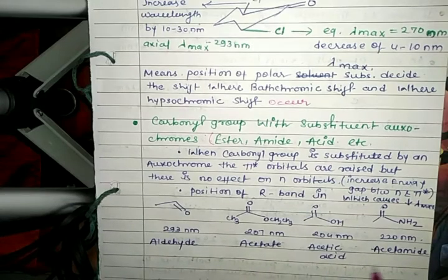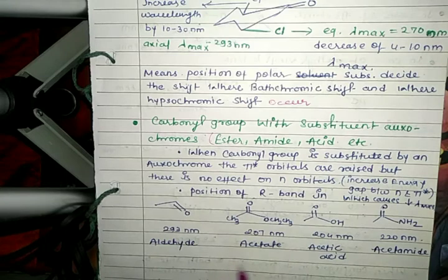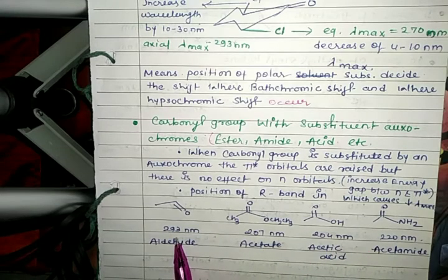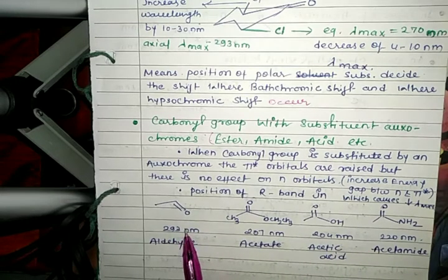The position of the R-band differs for aldehyde, acetate, acetic acid, and acetamide, giving different lambda max values. For aldehyde, lambda max is 293 nanometers; for acetate, 207 nanometers; for acetic acid, 204 nanometers; and for acetamide...